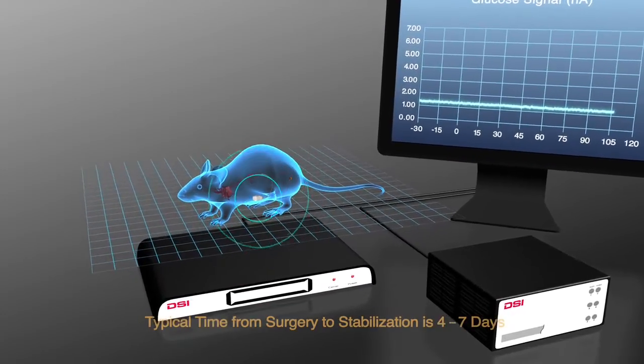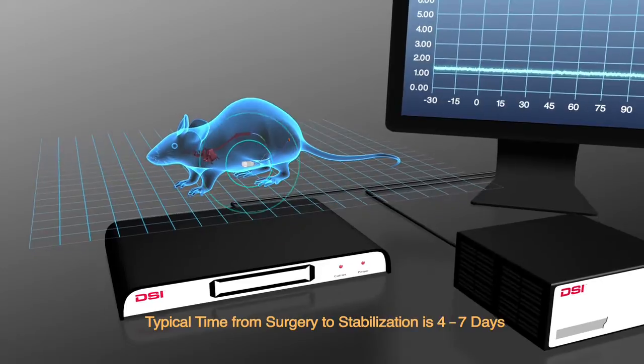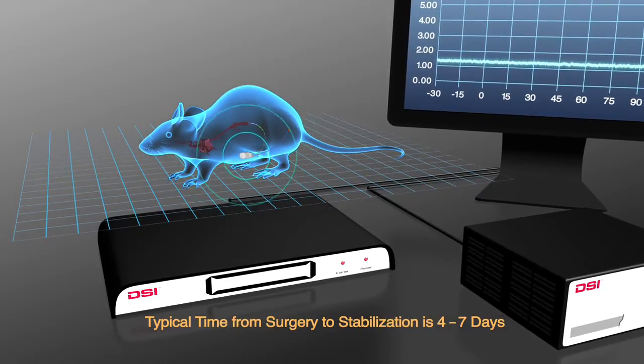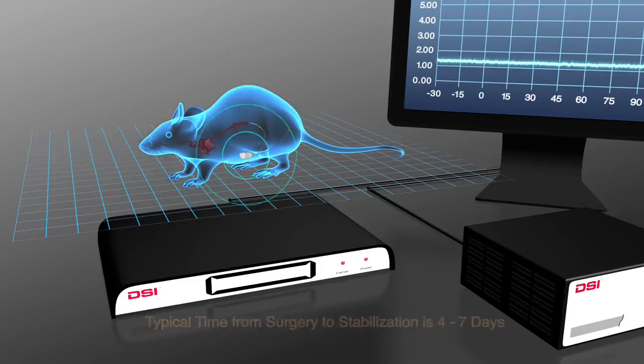After surgical implantation of the HDXG, place the animal in range of a receiver, leave the implant on, and enable data acquisition to assess the animal's health and observe stabilization of the implanted sensor.